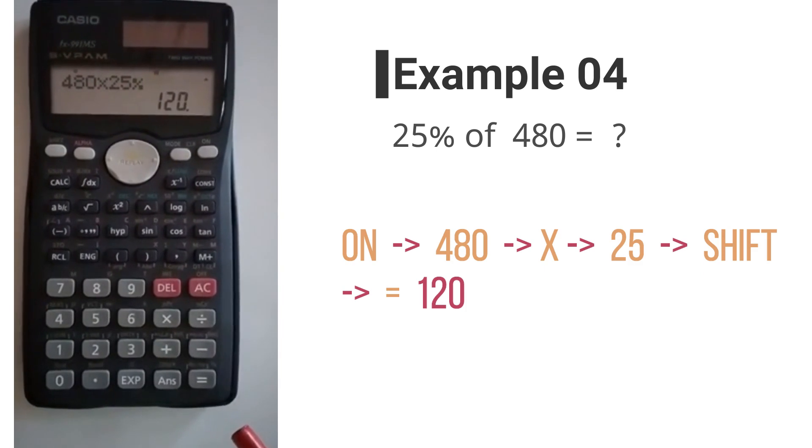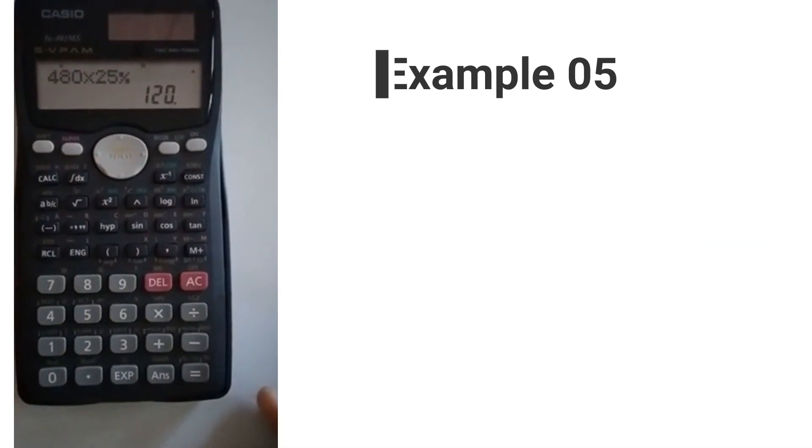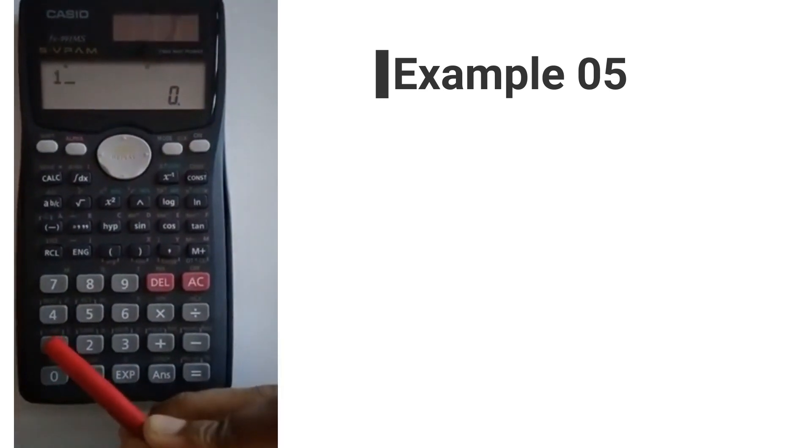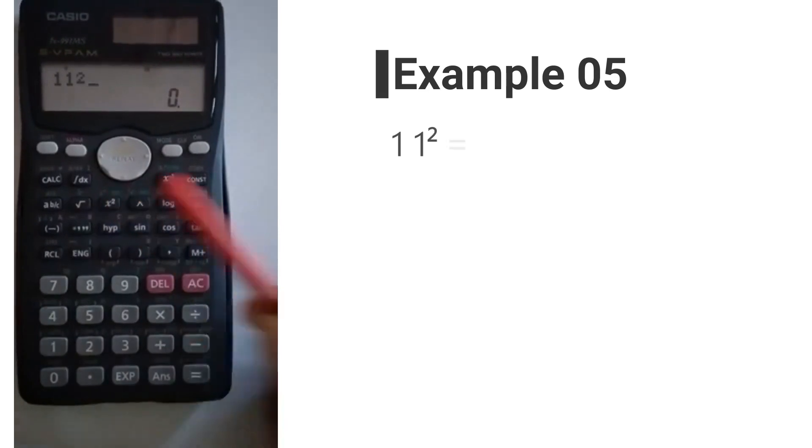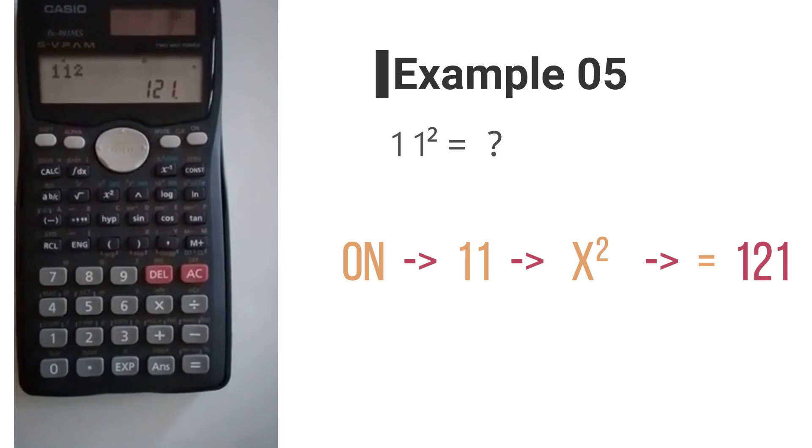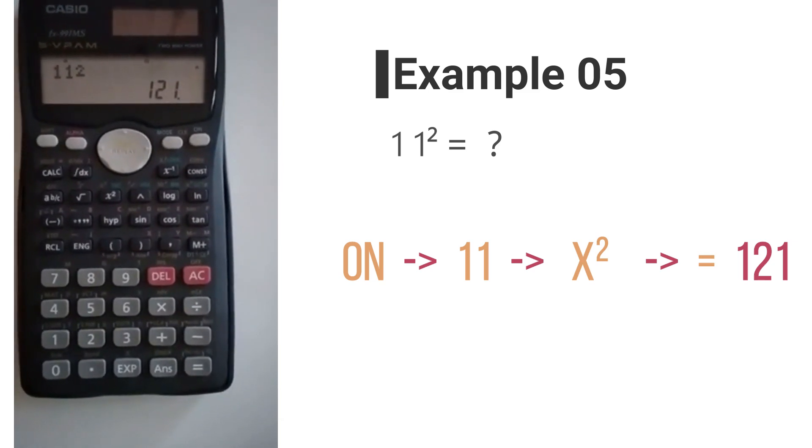to 120. Now let's move on to see how to perform squaring using the scientific calculator. 11, square key, result key, gives you 121. So this says 11 squared is 121. Let's move on to another